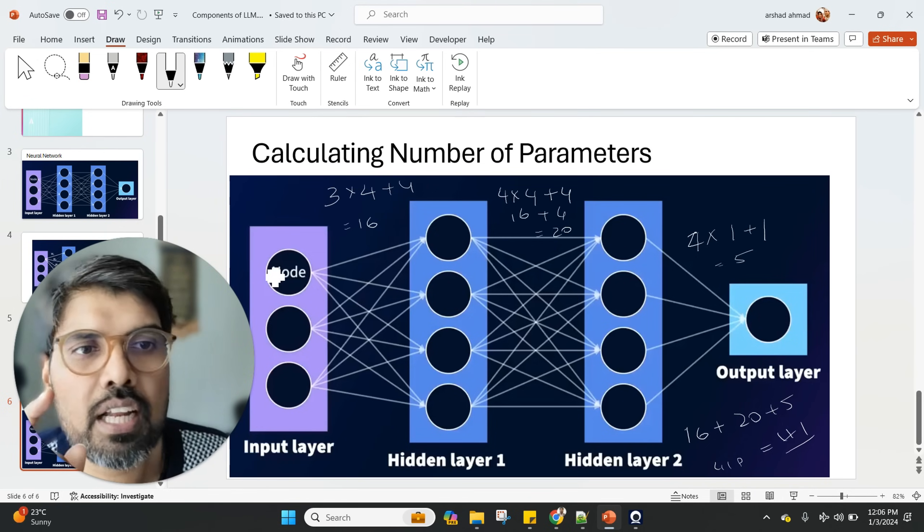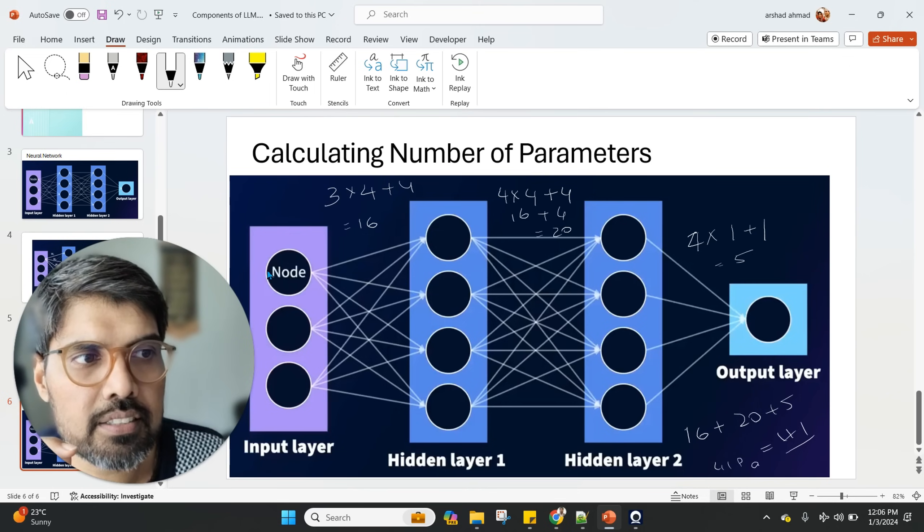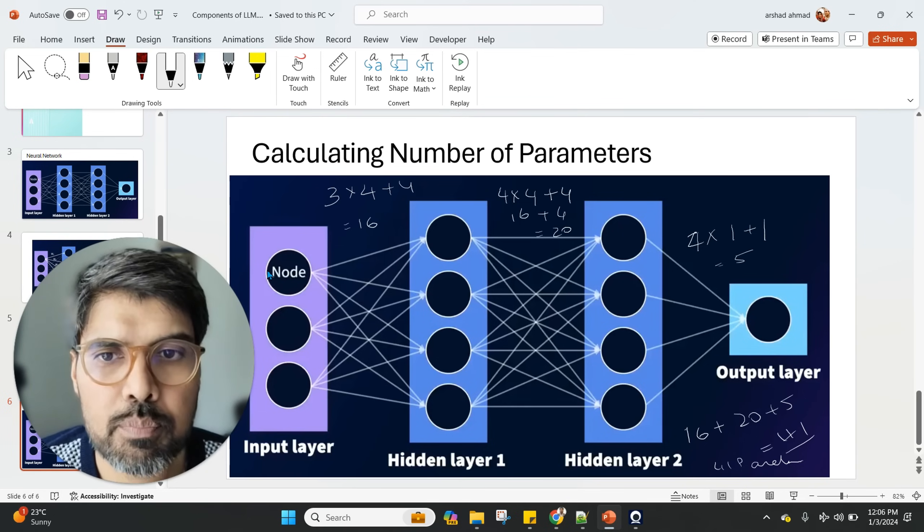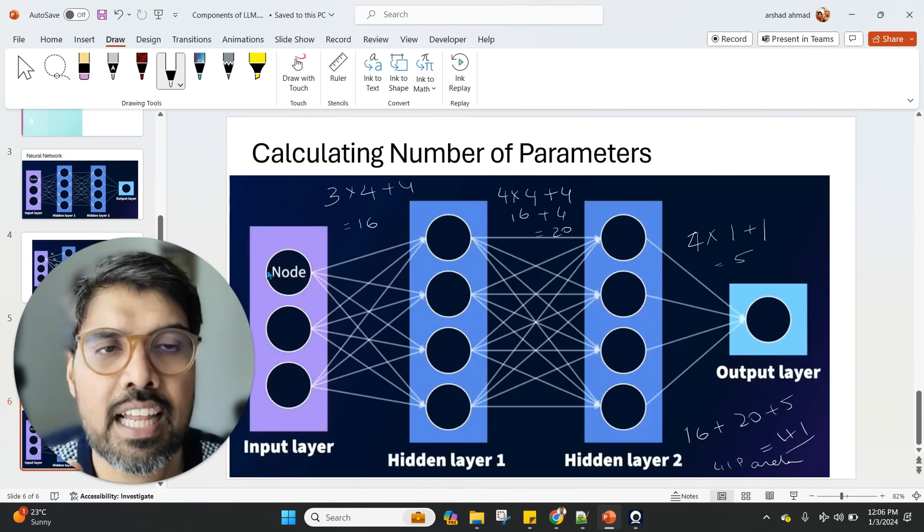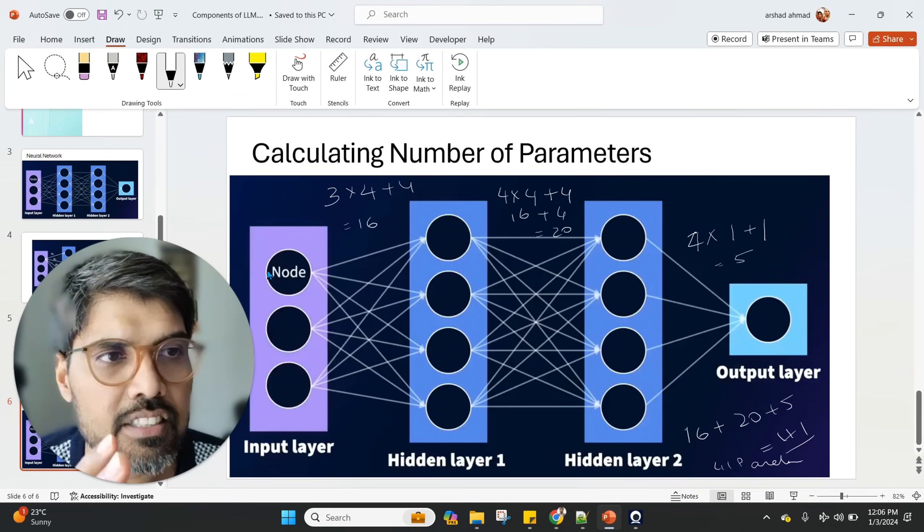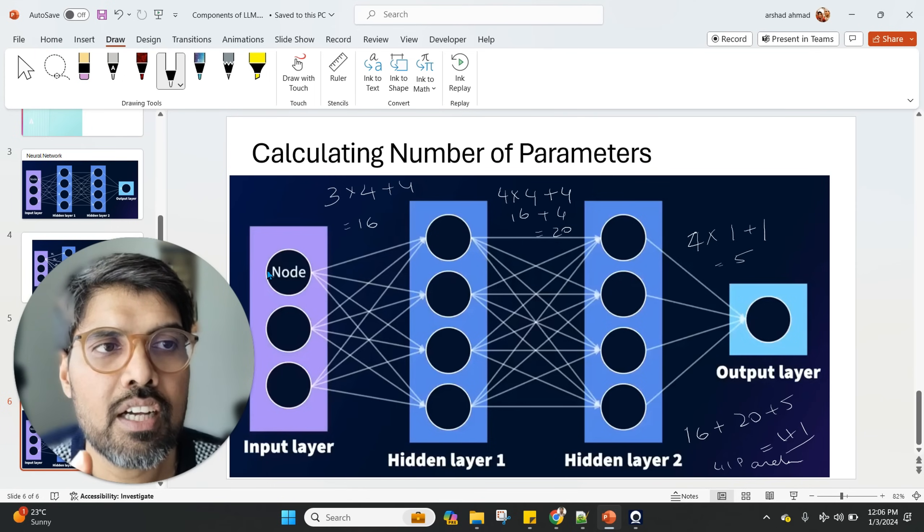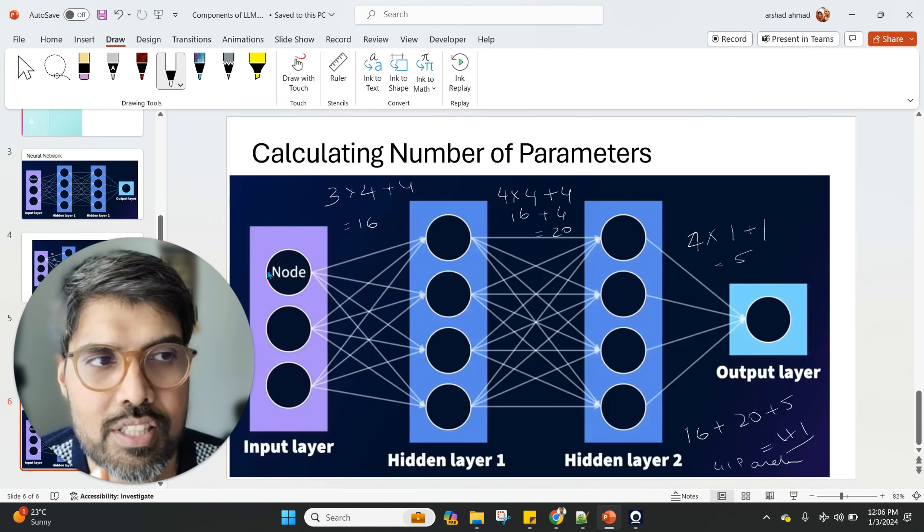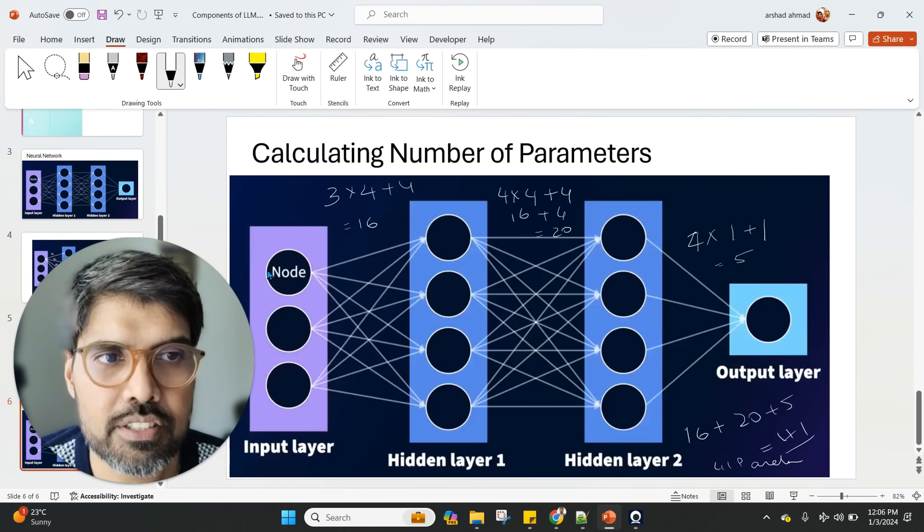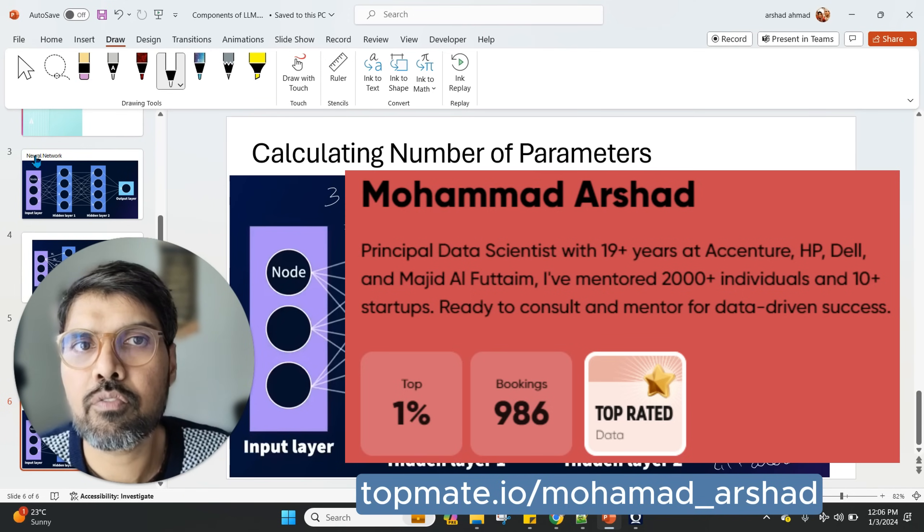I have given a quiz in our community a few days back about the same network and asking for the parameters. So this is the way we calculate the parameters. To give you a sense of perspective, most large language models like GPT-3 and Llama, they have several billion parameters and they consist of a lot of layers, a lot of nodes, and a lot of connections like this. So this is a completely connected network, and this is the way we calculate the number of parameters. Looking forward for more such informative videos in the coming days.